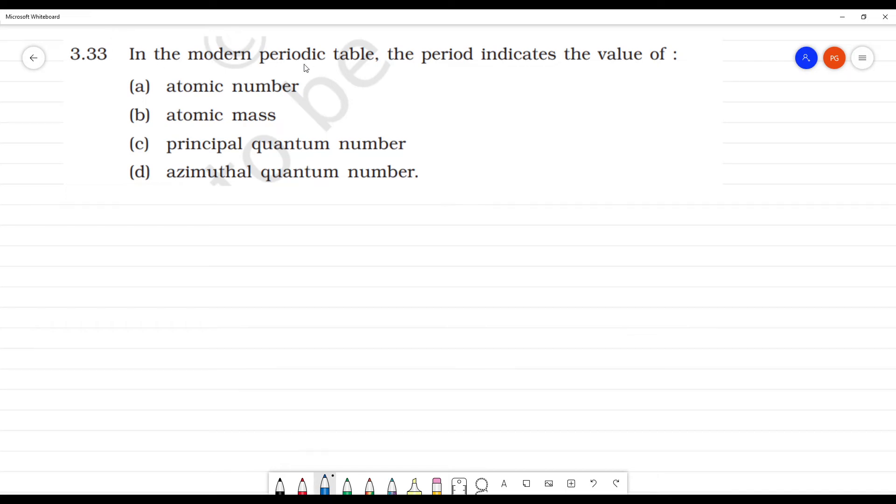In the modern periodic table, the period indicates the value of... so we have seven periods.